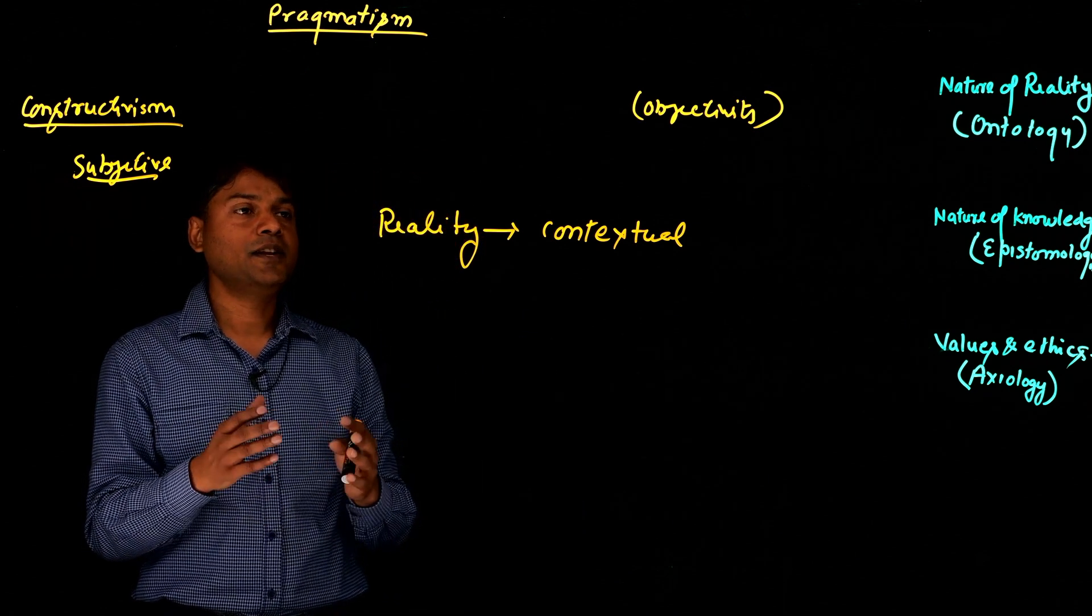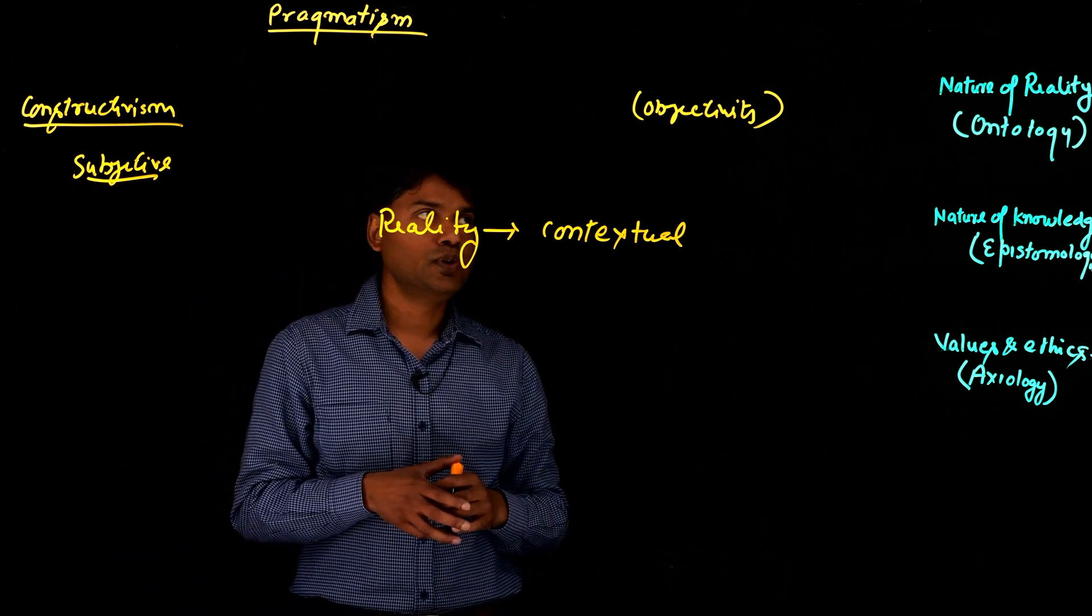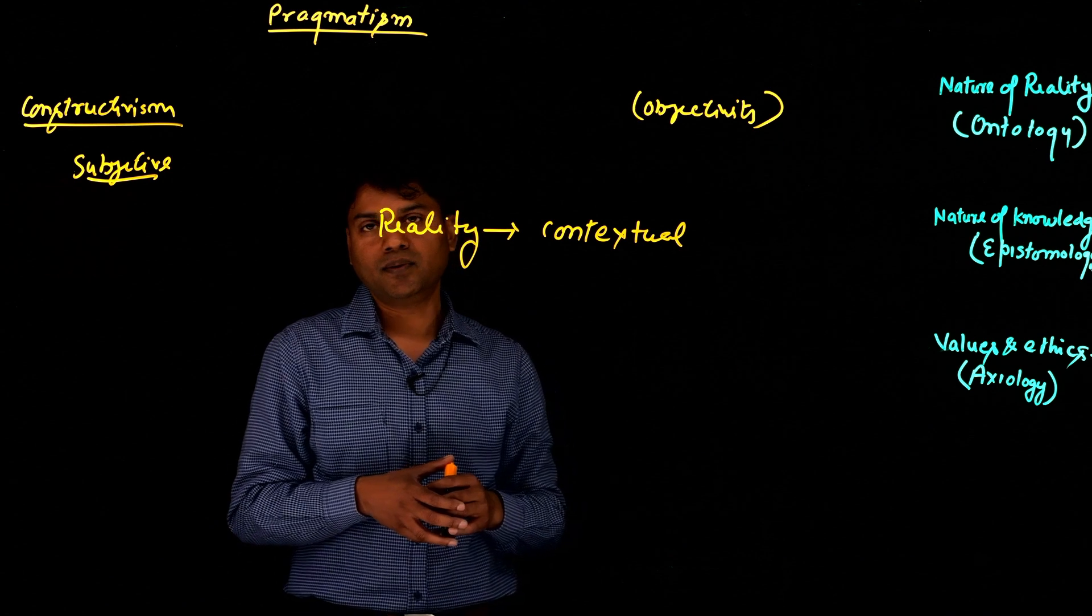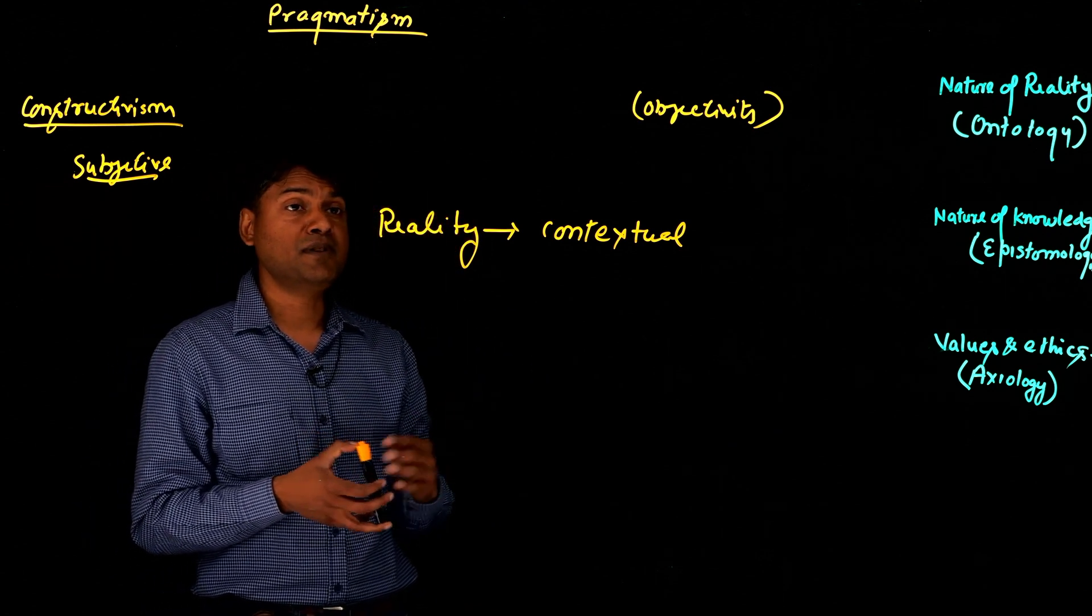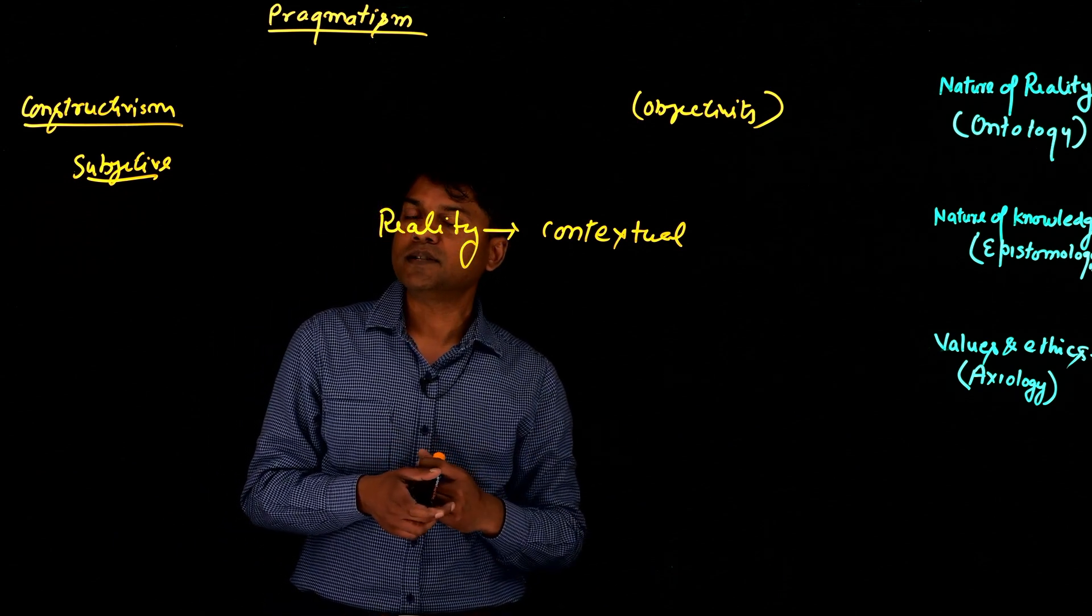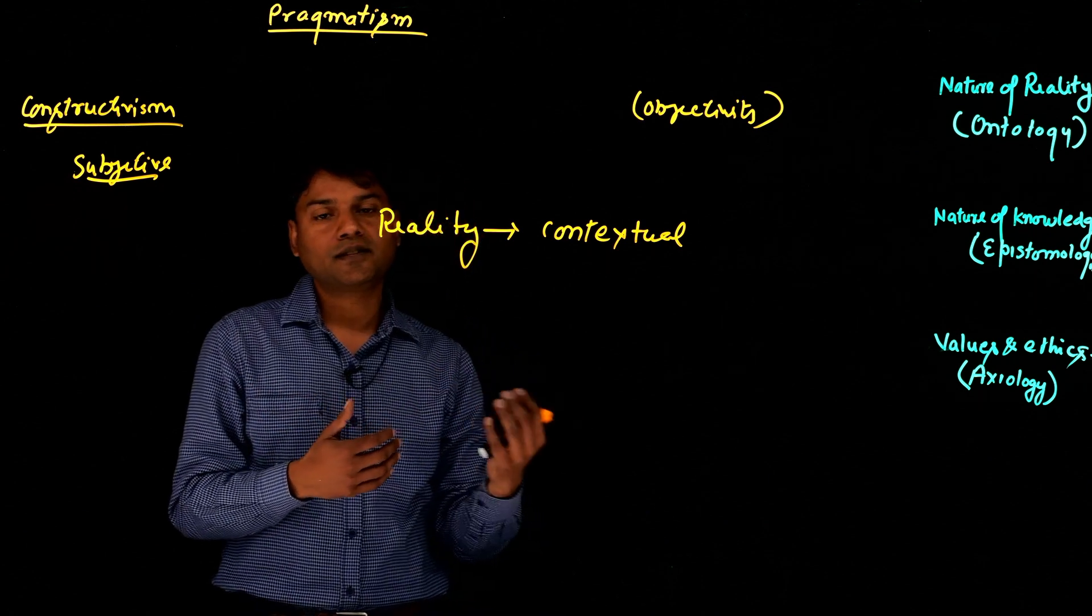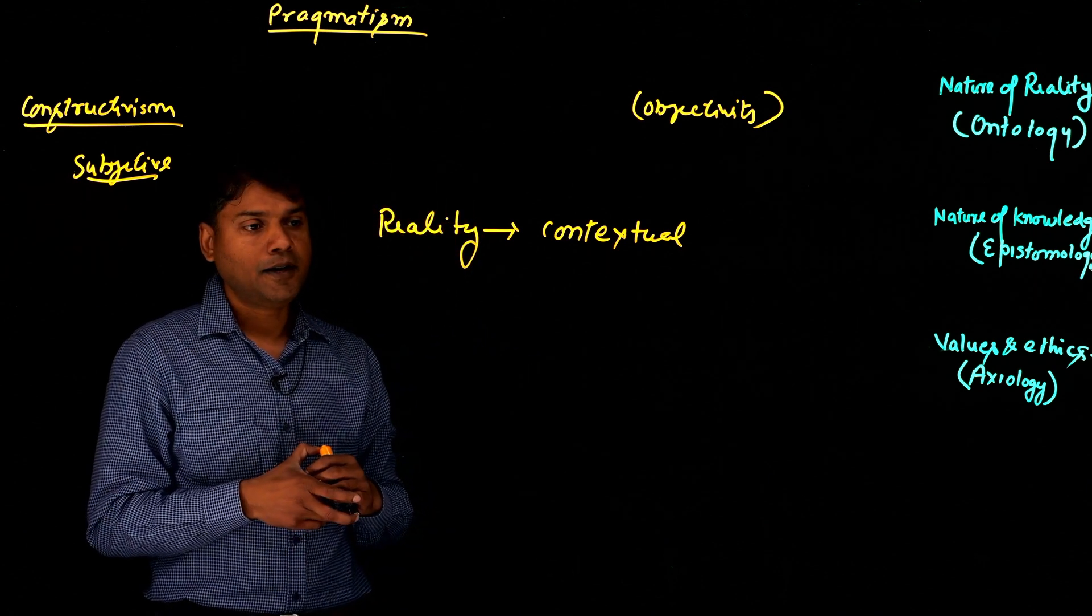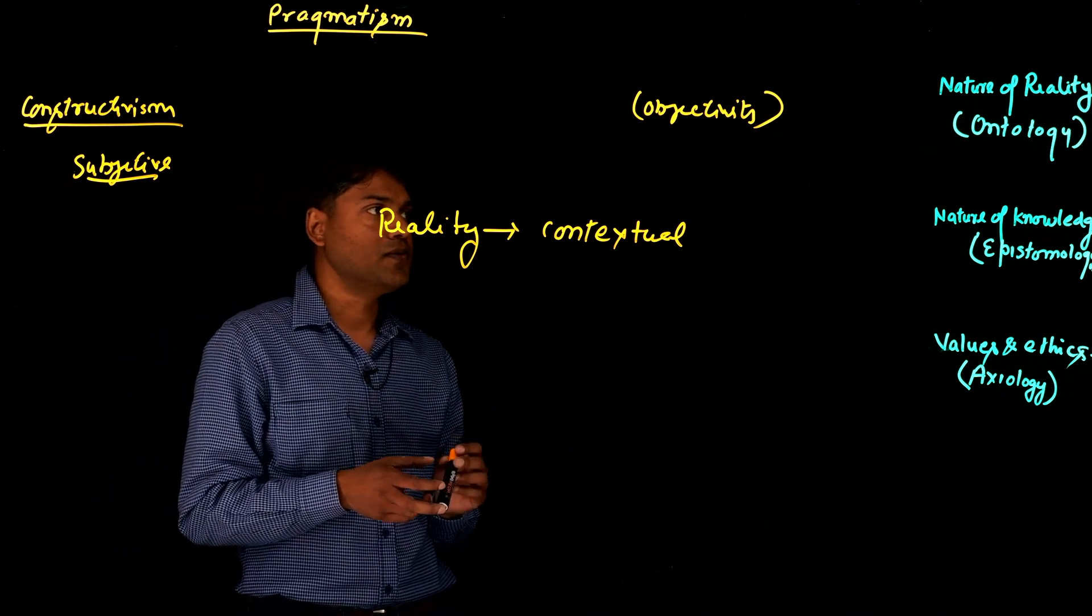So they take a very pragmatic approach to the question of what is truth, what is real. So they are like, yes, in some cases, maybe reality is contextual, but in some, sorry, objective, in some cases, it's subjective. So we need to understand the context behind that when we are talking about what is real and what is not real.